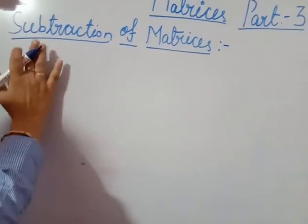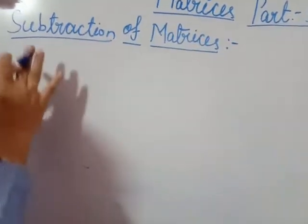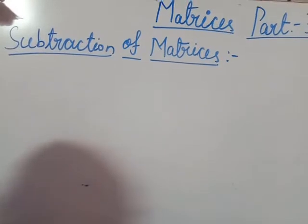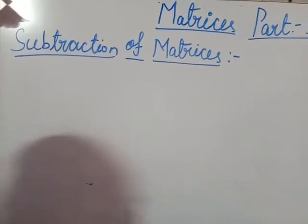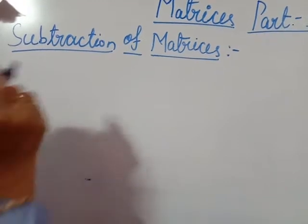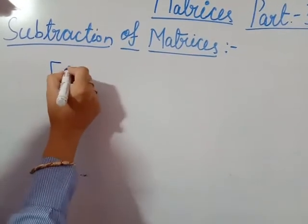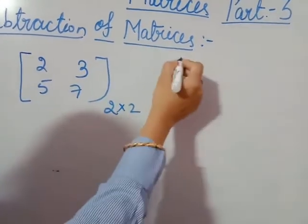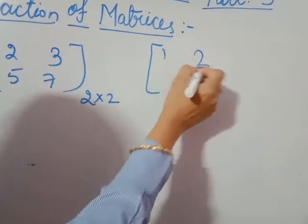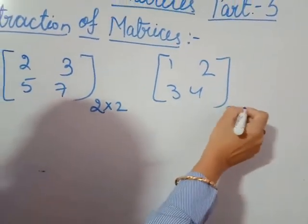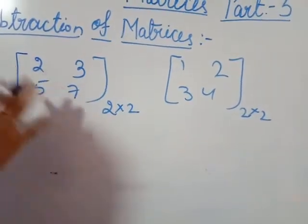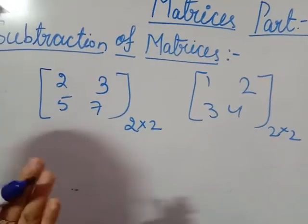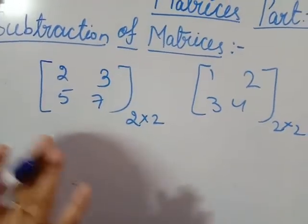Now the second topic is the subtraction of matrices. Don't be confused — the same condition that applies to addition applies to subtraction. Matrices must be in the same order. Different order matrices cannot be added or subtracted. Let us take matrix 2, 3, 5, 7 — a 2×2 order — and another matrix 1, 2, 3, 4 — also 2×2. The same condition applies: matrices must be in the same order.